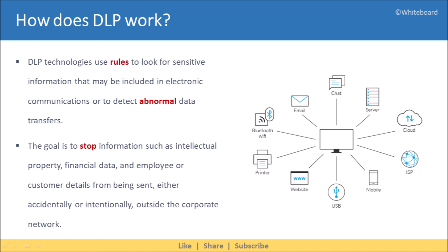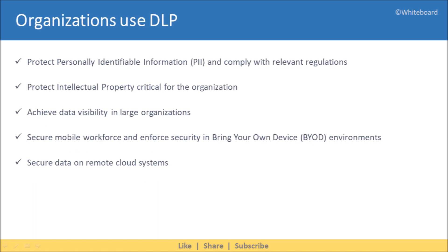Let's understand how it works. It uses rules to look for sensitive information that may be included in electronic communications, or to detect abnormal data transfers. The goal is to stop information such as intellectual property, financial data, and employee or customer details from being sent, either accidentally or intentionally, outside the corporate network. Organizations use data loss prevention tools to protect personally identifiable information and comply with relevant regulations, protect intellectual property critical for the organization, achieve data visibility in large organizations, secure mobile workforce and enforce security in bring-your-own-device environments, and secure data on remote cloud systems.